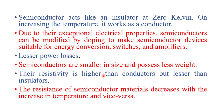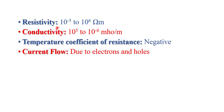The resistivity of a semiconductor is higher than a conductor but less than an insulator. The resistance of semiconductor material decreases with an increase in temperature and vice versa. The resistivity of a semiconductor lies between 10⁻⁵ to 10⁶ ohm-meter, and conductivity lies between 10⁵ to 10⁻⁶ ohm per meter. Semiconductors have a negative temperature coefficient of resistance.